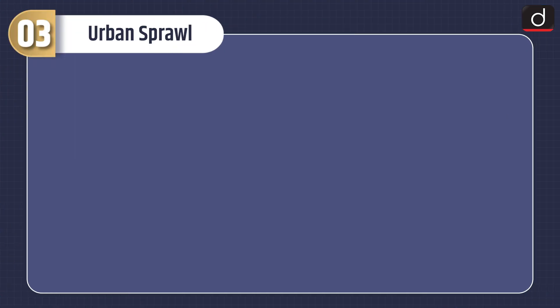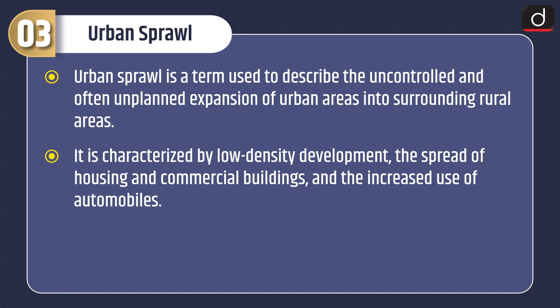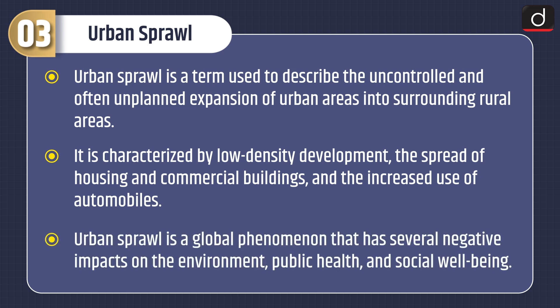Now let's discuss about urban sprawl. Urban sprawl is a term used to describe the uncontrolled and often unplanned expansion of urban areas into surrounding rural areas. It is characterized by low-density development, the spread of housing and commercial buildings, and the increased use of automobiles. Urban sprawl is a global phenomenon that has several negative impacts on the environment, public health, and social well-being.